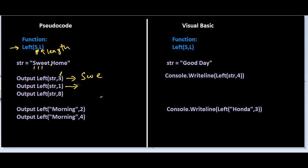When this instruction is executed, we only want to extract one character from the left side, which is going to be S — just the first character. And in this instruction, we are extracting the first eight characters from the left side: one, two, three, four, five, then a blank space, six, seven, and eight. So what's going to be output is 'sweet' with a space and 'HO'.